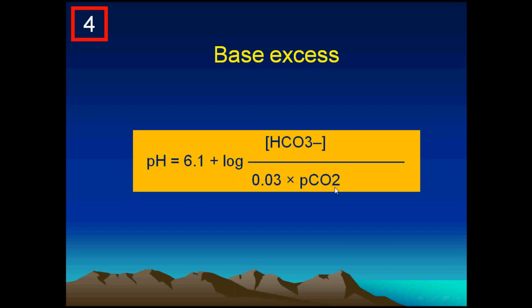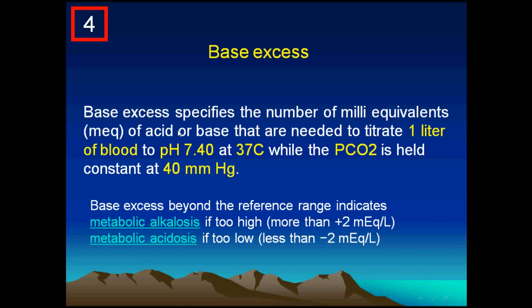And also the reverse: if the partial pressure of carbon dioxide returned back to normal, which is 40, and the pH is still low, less than 7.4, this difference is due to a deficiency of bicarbonate, and in this case it is called the base deficit. The definition: base excess specifies the number of mL equivalent of acid or base needed to titrate one liter of blood to pH 7.4 at 37 degrees, while the partial pressure of CO2 is held constant at 40 mmHg. So what we do is correct the partial pressure back to 40 and see if the pH is the same, less, or more — and any difference will be due to bicarbonate.